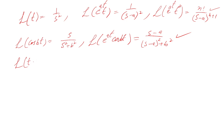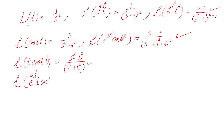In the last lecture, the Laplace transform of t cos(bt) was derived as (s squared minus b squared) over (s squared plus b squared) squared. Applying the Shifting Rule by multiplying with e^(at), s is replaced by (s minus a), giving (s minus a) squared minus b squared, divided by (s minus a) squared plus b squared, all squared.